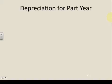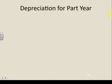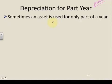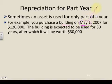Now let's talk about that proration — depreciation for a partial year. Sometimes an asset is used only for part of a year because you purchased it mid-year. This is most often the case. For example, you purchase a building on May 1st. Always look at the date — this is not for a full year, so you have only a partial year and you need to prorate.